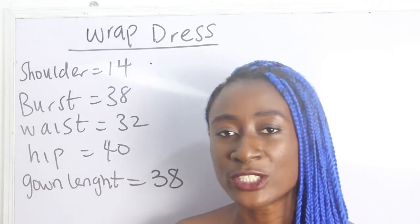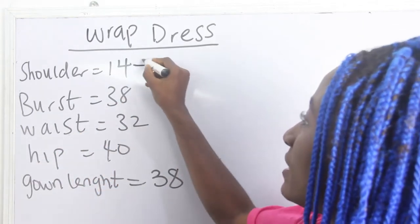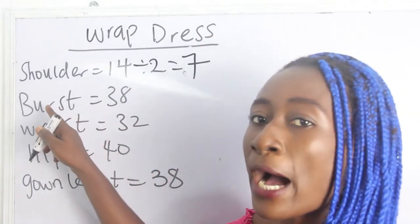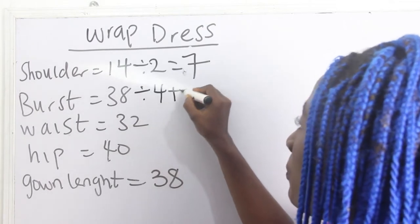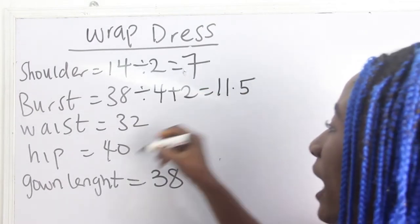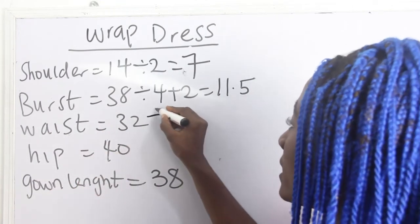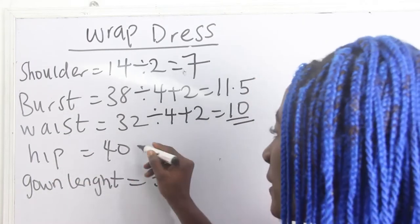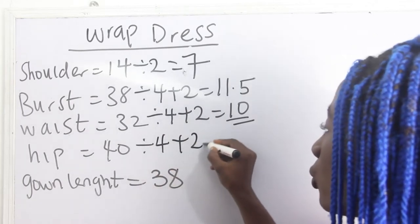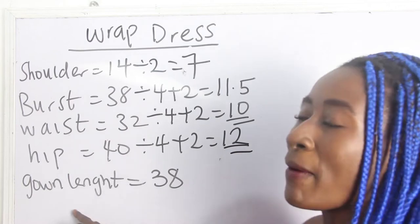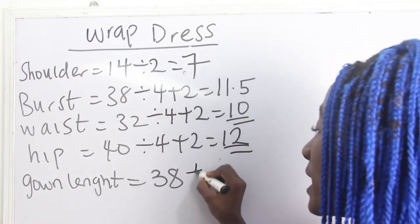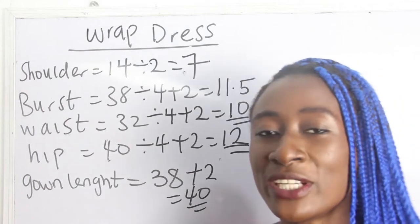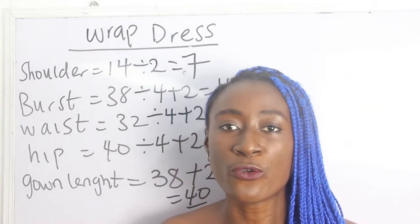Let's calculate our measurements. Shoulder is 14 divided by 2, giving us 7 inches. Bust is 38 divided by 4 plus 2, giving 11.5 inches. Waist is 32 divided by 4 plus 2, giving 10 inches. Hip is 40 divided by 4 plus 2, giving 12 inches. Gown length is 38 plus 2 inches seam allowance, giving 40 inches. These are the basic measurements for your wrap dress.